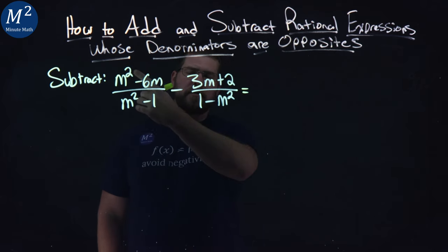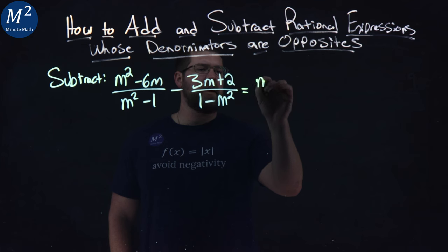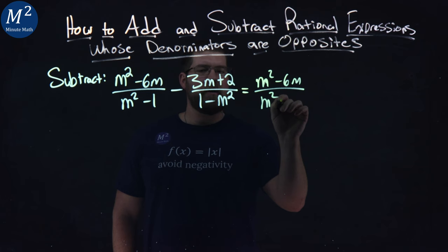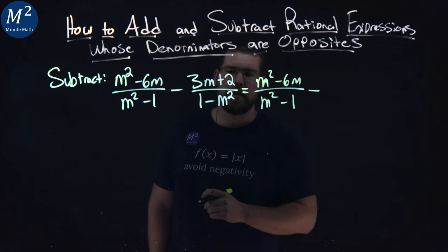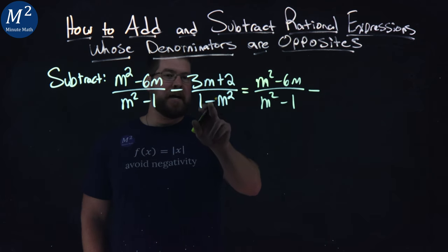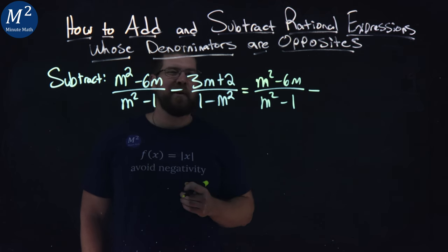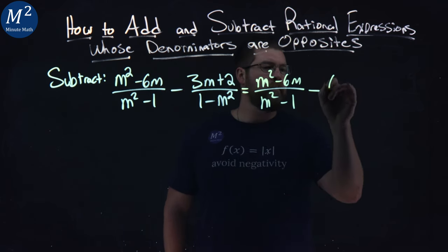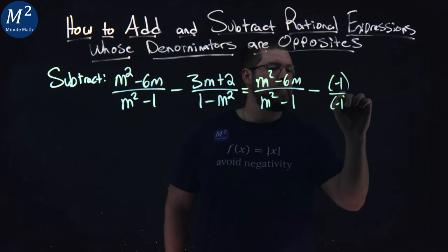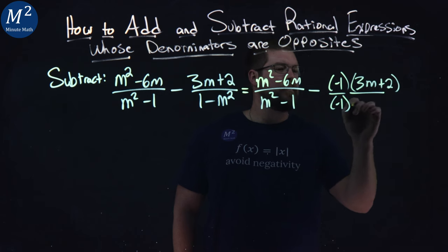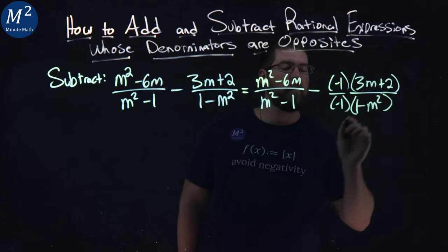Well, let's go rewrite the first fraction, m squared minus 6m over m squared minus 1 minus. And what I'm going to do here is I am actually going to multiply the second fraction by negative 1 over negative 1. As such, 3m plus 2 and 1 minus m squared here.